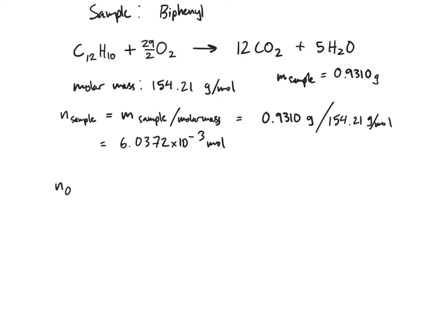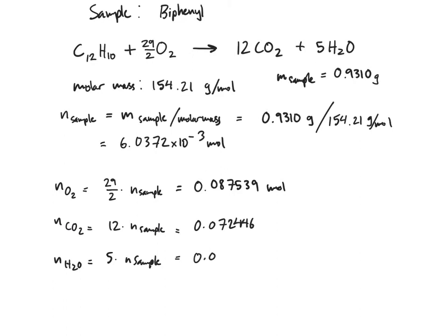Now I can use this number to calculate how many moles of the other substances were either reacted or produced by this combustion. Number of moles of O2 is 29 halves multiplied times the number of moles of the sample. If I run that calculation, I get 0.087539 moles. Similarly, I can also do n_CO2 and n_H2O. For n_CO2 it's 12 times n_sample, for H2O it's 5 times n_sample.